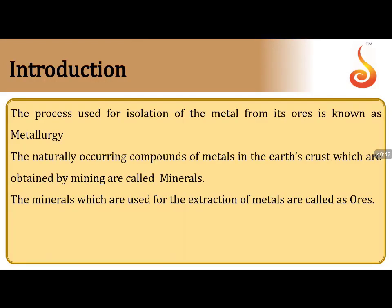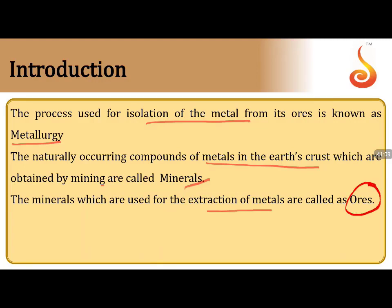Metallurgy is the process used for isolation of metals from their ores. Naturally occurring compounds of metals in the earth's crust obtained by mining are called minerals. But we cannot extract metal from every compound — we need profitable extraction. The minerals used for profitable extraction of metals are called ores. The unwanted impurities present in the ore — mud, stone, sand — are called gangue or matrix.